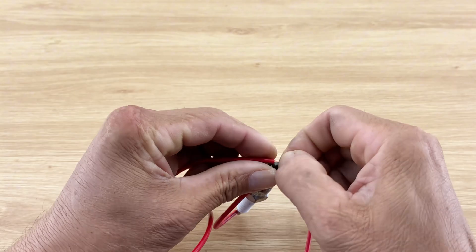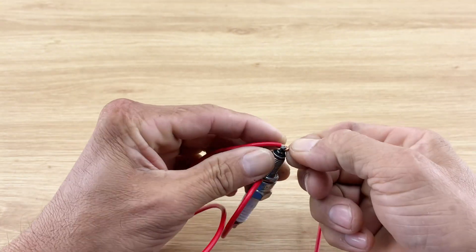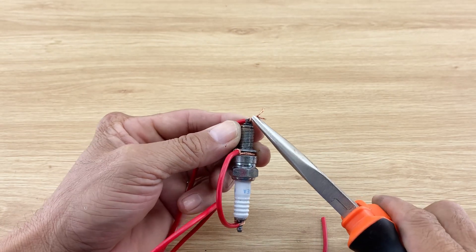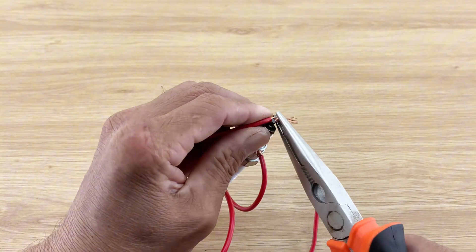I threaded the wire through the spark gap at the top of the spark plug and secured it securely. This wrapping method helps distribute any strain on the wire and ensures a robust electrical path. Using pliers, I twisted and secured the wire.